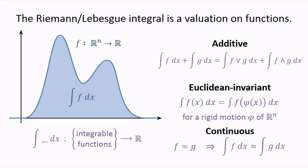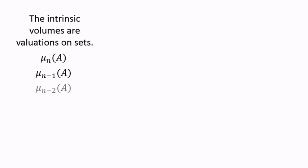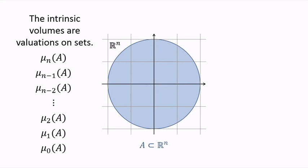Are there any other valuations on functions? It turns out that each of the intrinsic volumes has a functional analog. Recall that the intrinsic volumes are valuations on sets, and that mu k gives the k-dimensional size of a set, like this set A in Rn.